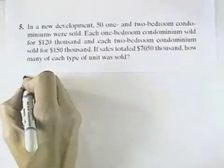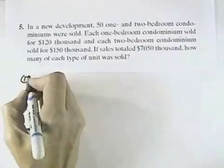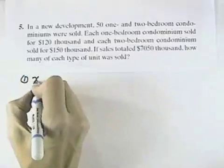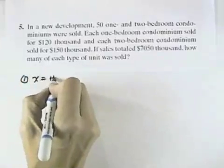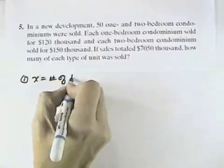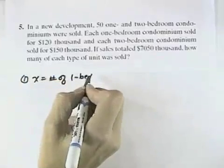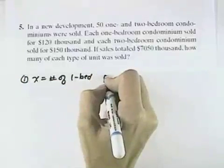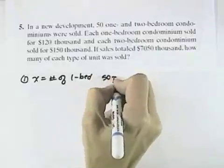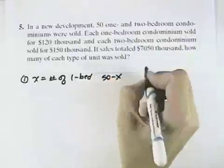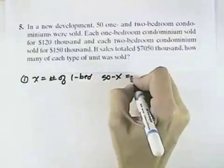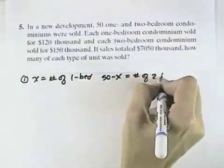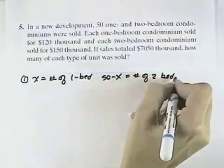Well, we want to use a four-step strategy for solving this. So the first thing we'll do is let X equal the number of 1-bedroom condos, in which case we'll let 50 minus X — since there's a total of 50 condos — be the number of 2-bedroom condos.